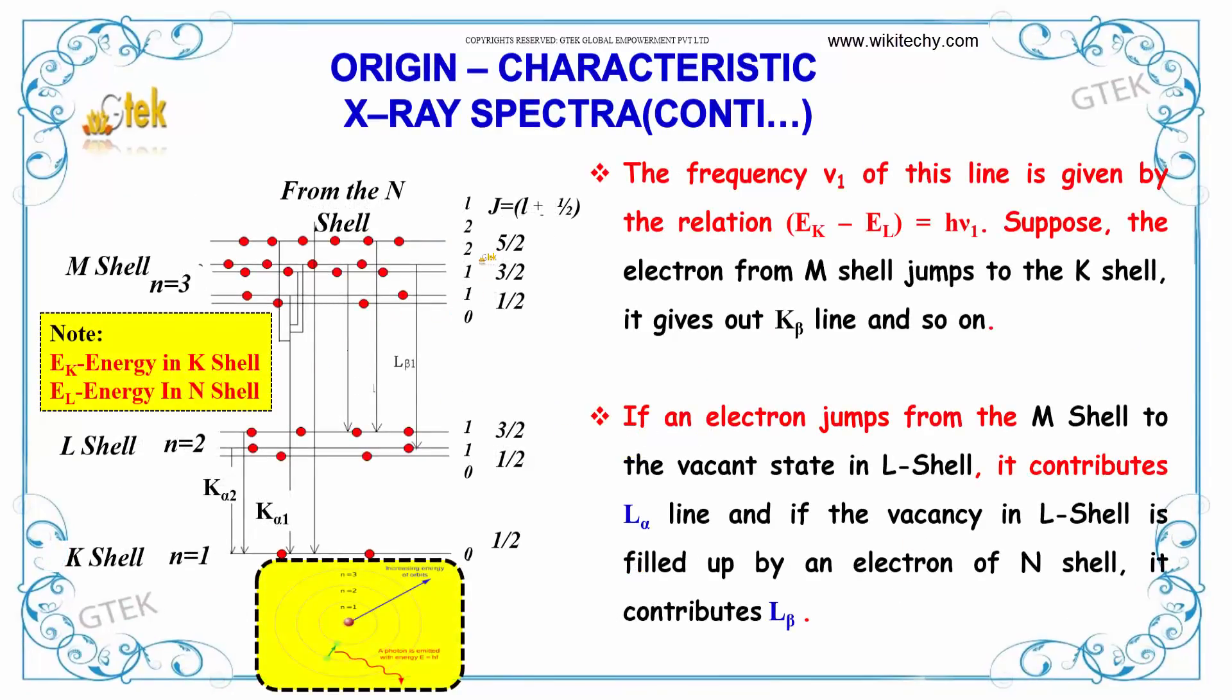The frequency V1 of this line is given by the relation Ek minus El equals hV1. Suppose the electrons from M shell jumps to the K shell, it gives out K beta line and so on. From L shell it's K alpha. If it is from M shell it's K beta.